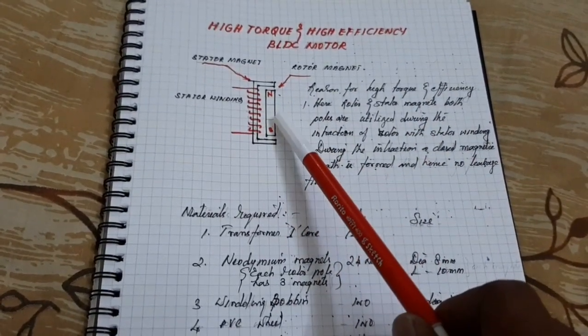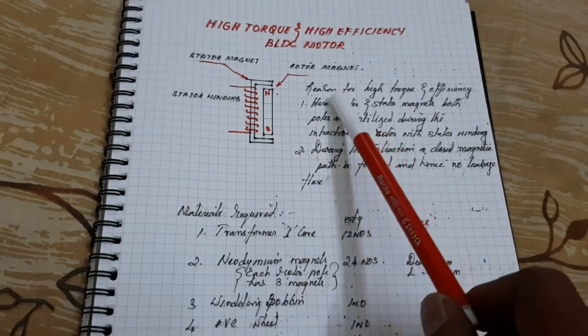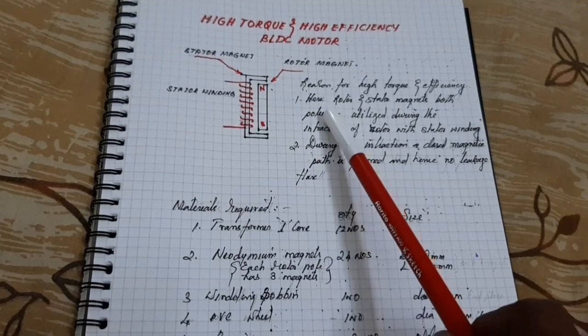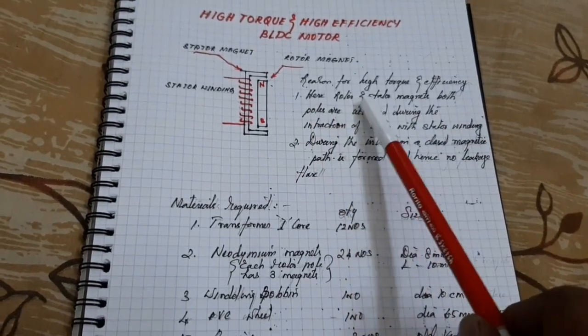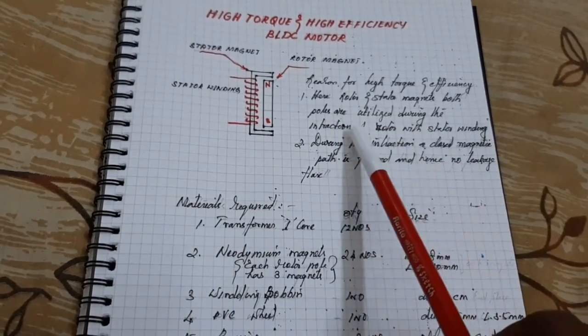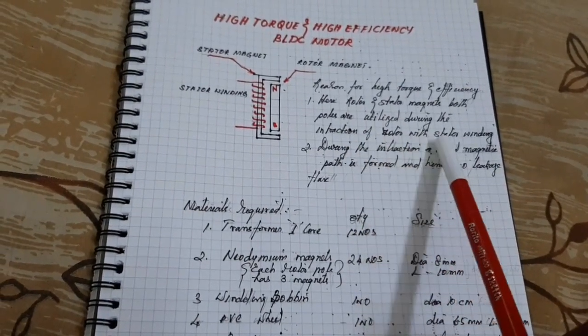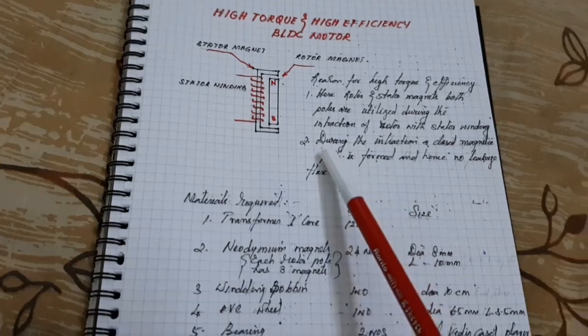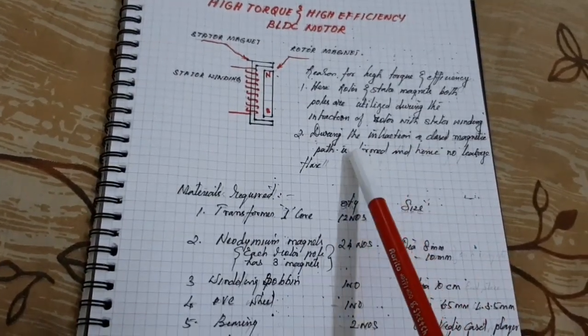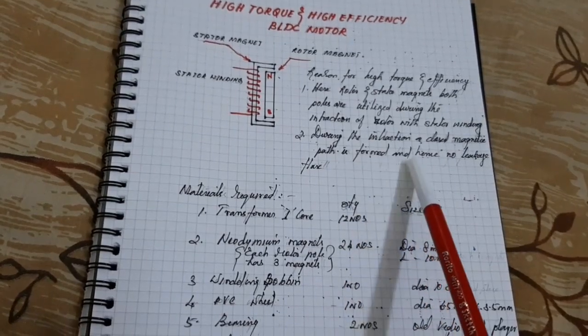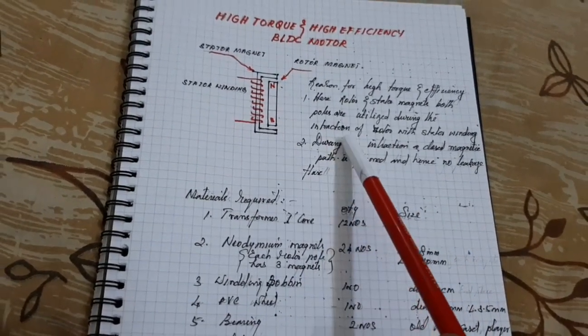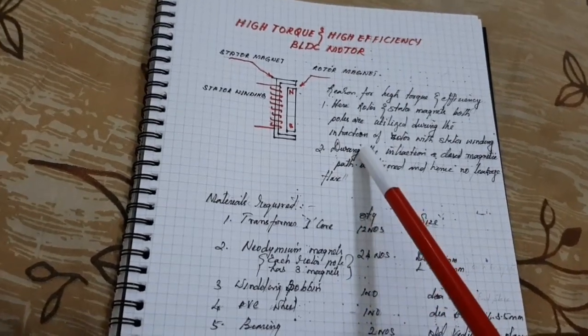Here, the reason for high torque and high efficiency. The rotor and stator magnet both poles are utilized during the interaction of the rotor with the stator winding. And during the interaction, a closer magnetic path is formed and hence no leakage flux. That's why it is called high torque and high efficiency PLDC motor.